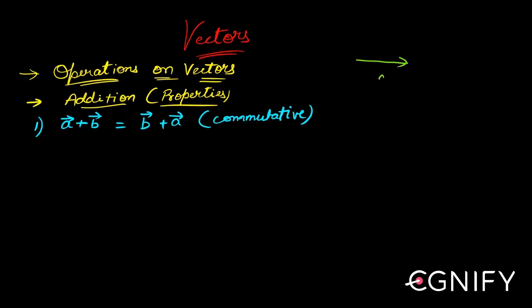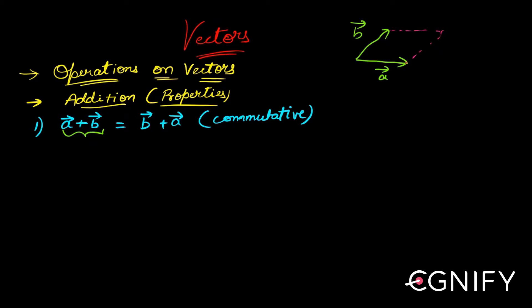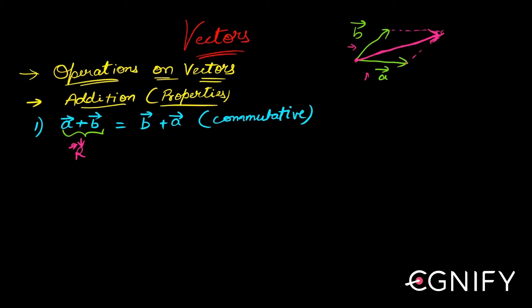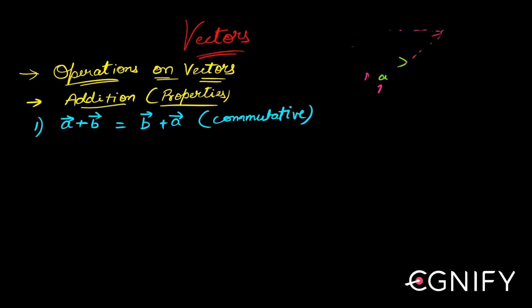You have two vectors a-bar and b-bar. If you want a-bar plus b-bar, you construct a parallelogram with a and b as its edges, and the diagonal — which starts from the point of contact of these two vectors and goes to the opposite end — gives you the length of your resultant magnitude. This is your resultant vector r-bar. What is b-bar plus a-bar? You do the same thing: take these two as the edges, construct a parallelogram, and take the diagonal as the resultant. Whether you take a-bar first or b-bar first doesn't matter, because ultimately you construct the same parallelogram and use the same diagonal. That is why addition of these two vectors is commutative.